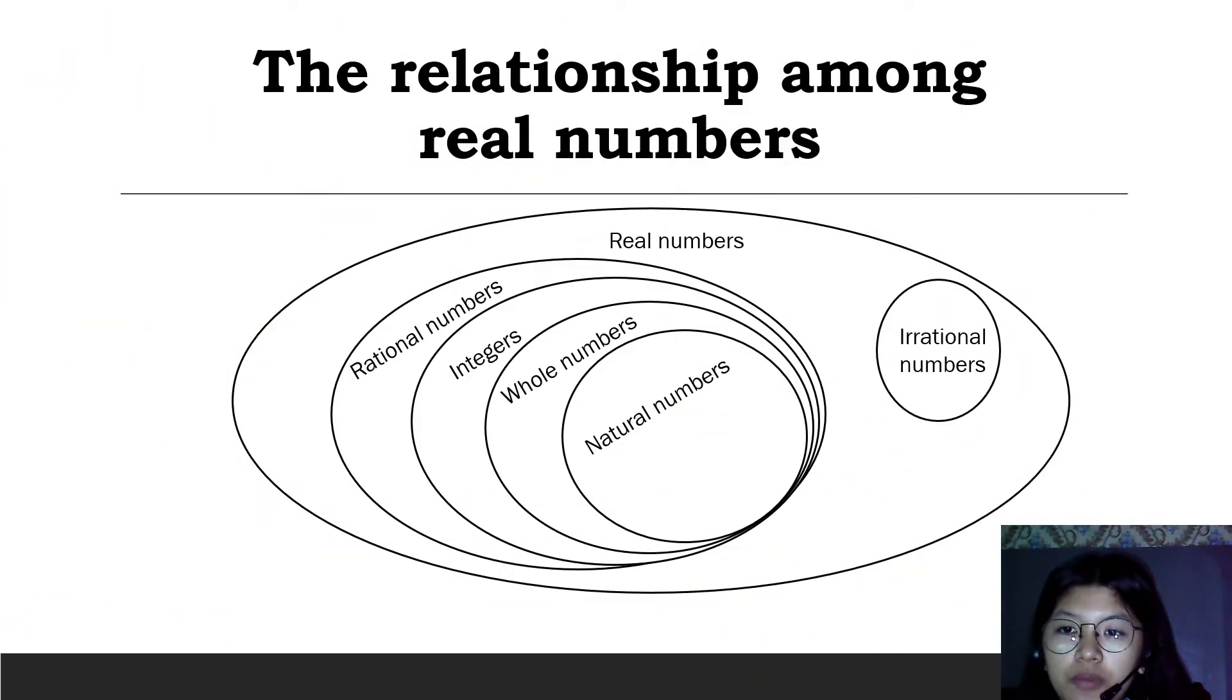The relationship among real numbers. We have here a diagram. The largest circle represents real numbers and there's a separate section for irrational numbers. Under rational numbers, there are integers, whole numbers, and natural numbers. Later we will discuss those real numbers.